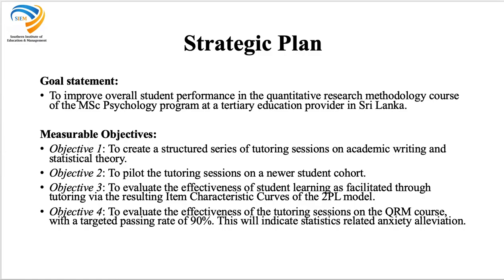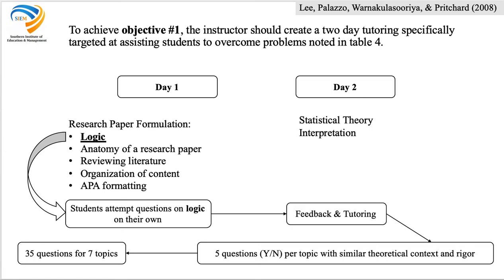After this analysis we came up with the strategic plan. The goal was to improve student performance, and we came up with four objectives. The first is to create a structured series of tutoring sessions on academic writing and statistical theory. The second was to run pilot tutoring sessions and measure effectiveness through the 2PL logistical model. The fourth objective was to demonstrate a 90% passing rate. For objective one we decided to do a tutoring session across two days, spending about four hours each day — day one for research paper formulation and day two for statistics and interpretation — incorporating the seven sub-themes identified from our results.